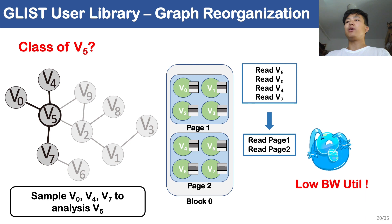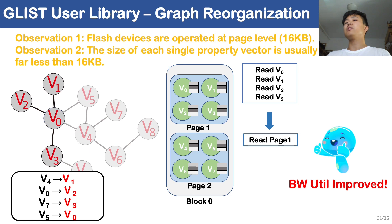Suppose we are classifying vertex V5 in the graph. The sample operator samples a subgraph containing V5, V0, V4, and V7, which will be further operated in the aggregate and combine steps. In the case of no optimizations for data layout, as shown in the figure, two flash pages will be loaded and there is waste of flash bandwidth. To tackle such problems, we have two observations. First, flash devices can only be operated at page level, meaning the minimum operation granularity is 16 KB. Second, the size of each single property vector is usually far less than 16 KB, indicating the necessity of data accessing optimizations. Based on these observations, the data layout of the graph property vectors can be optimized so that data more likely to be loaded at the same time will be placed in the same flash page.